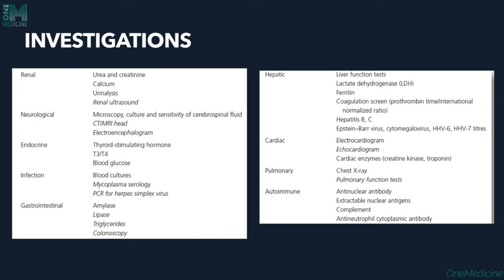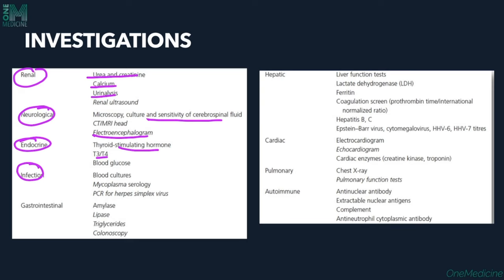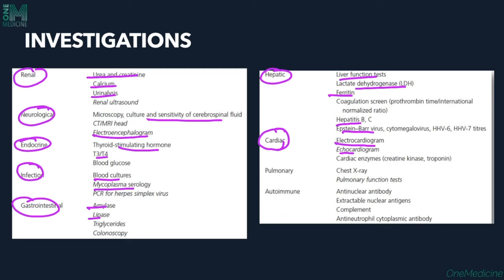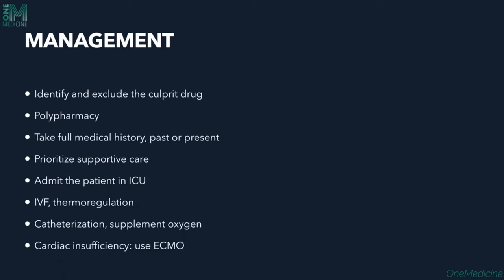Investigations include renal function tests (urea, creatinine, urinalysis), neurological workup (CSF examination, EEG), endocrine tests (TSH, T3, T4, blood glucose), blood cultures, mycoplasma serology, gastrointestinal markers (amylase, lipase), liver function tests with LDH, ferritin, hepatitis B/C serology, Epstein-Barr virus serology, cardiac evaluation (ECG, echocardiography, cardiac enzymes), chest X-ray, PFTs, and autoimmune panel (ANA, ENA, complement levels, ANCA).